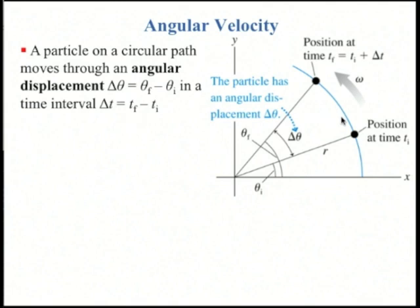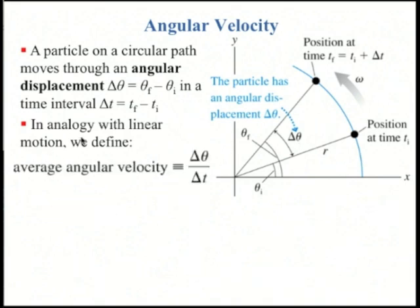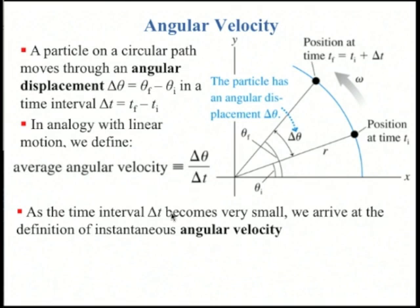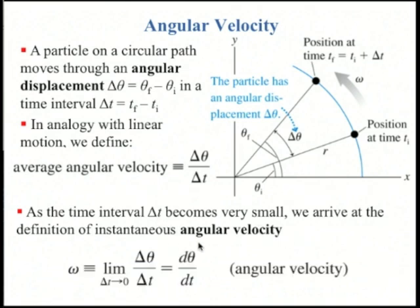This particle will move through some angular displacement delta theta over a time delta t. In analogy with linear motion, we define the average angular velocity as delta theta divided by delta t. Taking the limit as delta t becomes very small gives us the instantaneous angular velocity, written with the Greek letter omega — that's the last letter of the Greek alphabet. It equals the limit as delta t approaches zero of delta theta over delta t, or d theta by dt. This is the angular velocity.